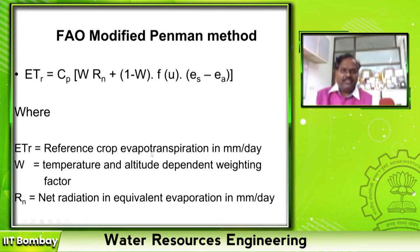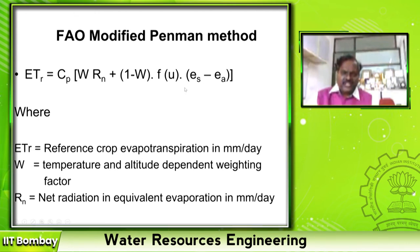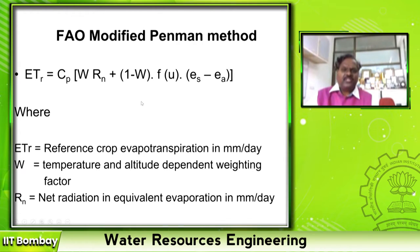I am not going to explain in detail about any of these radiation-based methods — you can read that. But let us see the FAO modified Penman method. This is one of the combined methods — it uses temperature, radiation, and wind speed. The general formula used is: ES minus EA is vapor pressure deficit, FU is the wind function, RN is the radiation function, W is the weighting factor, and CP is the coefficient which depends upon latitude, longitude, and all other parameters. The estimation of each value involves sub-formulas.